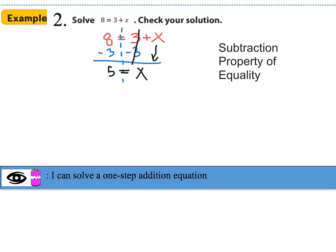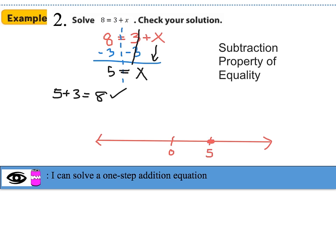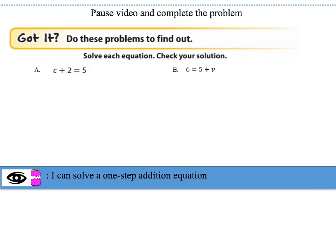I can check my answer by plugging it back in: 5 plus 3 does equal 8, so I've checked my work. Now let's graph this solution on a number line. Starting with 0 in the center, since our answer is positive 5, I'll go to the positive region and identify positive 5 with a solid circle, because that is the only number that can make this equation true. Pause the video and complete got-it problems A and B, and make sure to graph your solution on a number line.